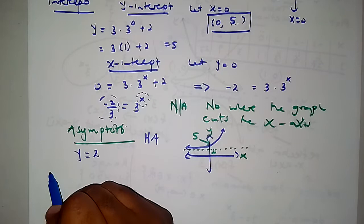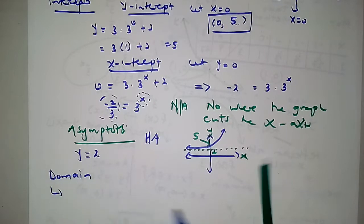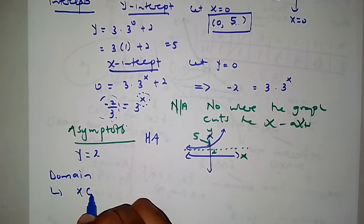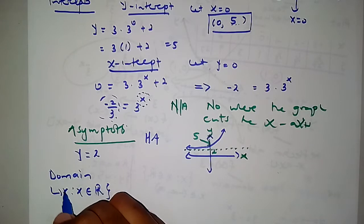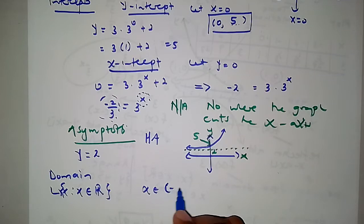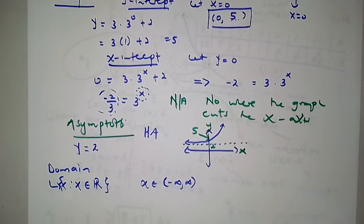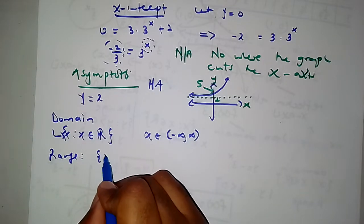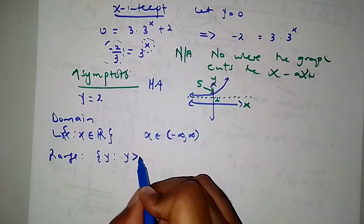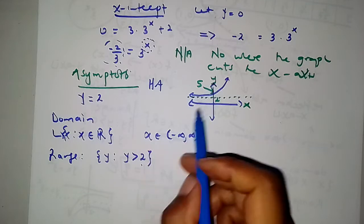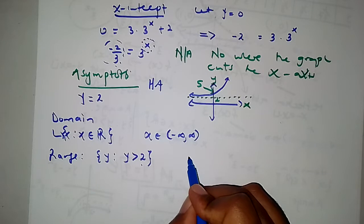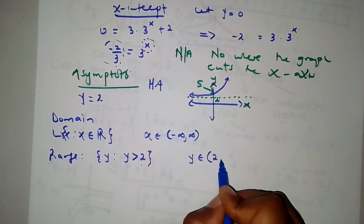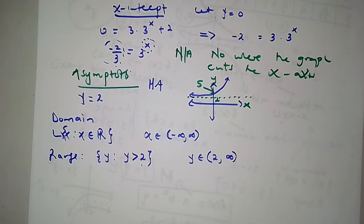What is the domain of this graph? As far as the x-values are concerned, this graph exists everywhere. You can write it as x is an element of real numbers, or you can also write it using interval notation — choose whichever you're more comfortable with. As for the range, it is going to be y greater than 2, since y equals 2 is the asymptote and cannot be included. Or in interval notation, 2 to infinity. There is no axis of symmetry, so you can just ignore that.